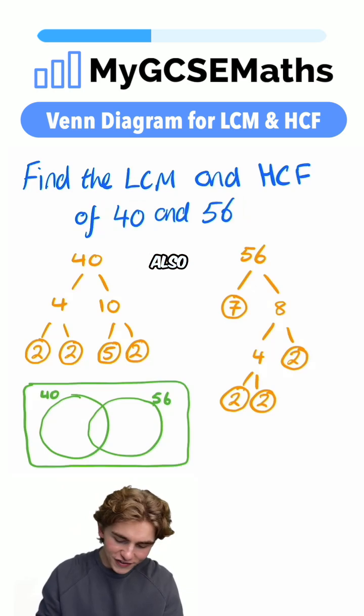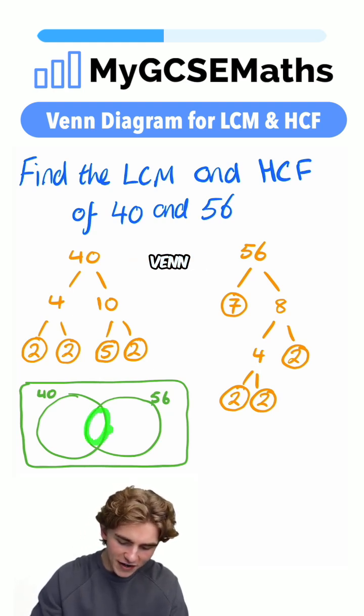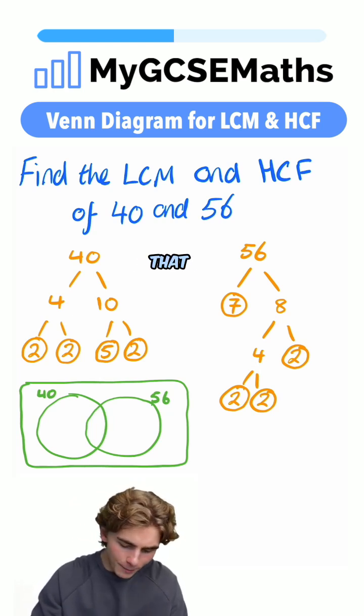And you can see that we've also written on this Venn Diagram. Now, how are we going to fill this in? In order to work out the numbers which are going to be in the middle of the Venn Diagram, we're going to look for the prime factors which are in both of the factor trees. We can see that both factor trees have a two, a two and a two.